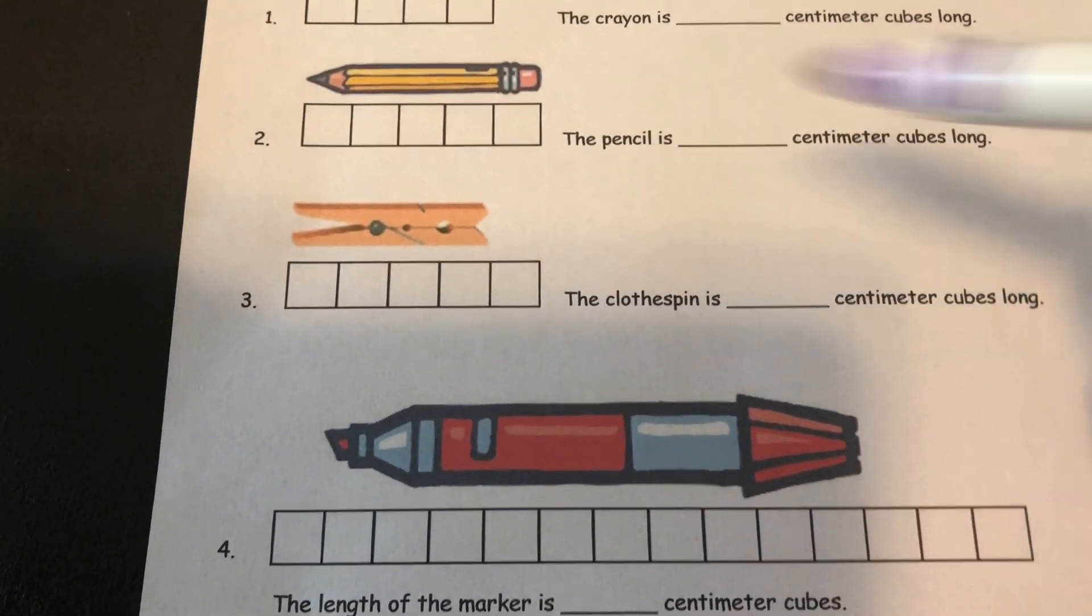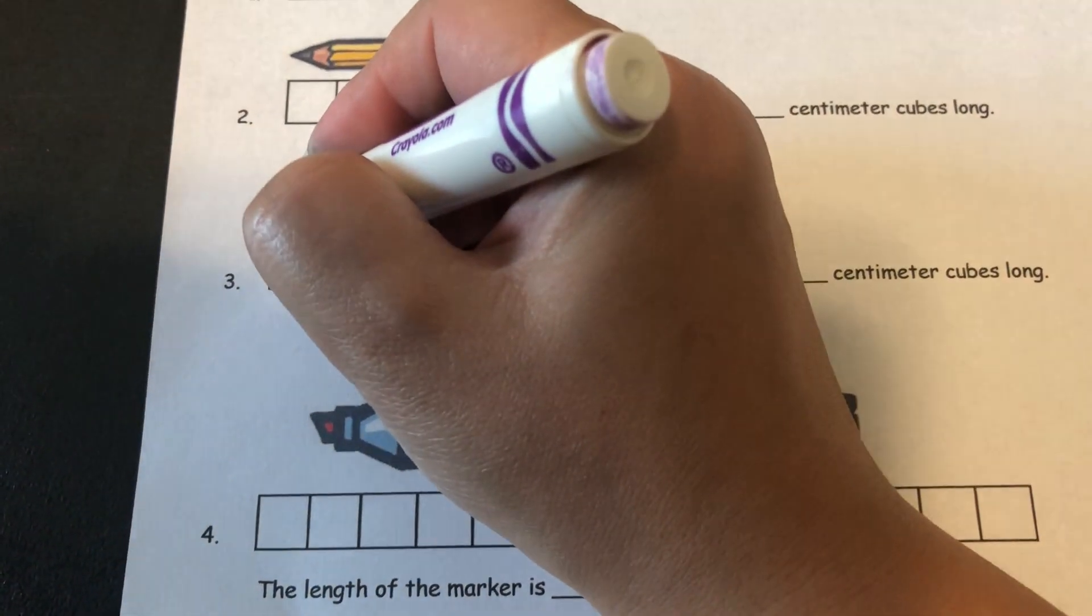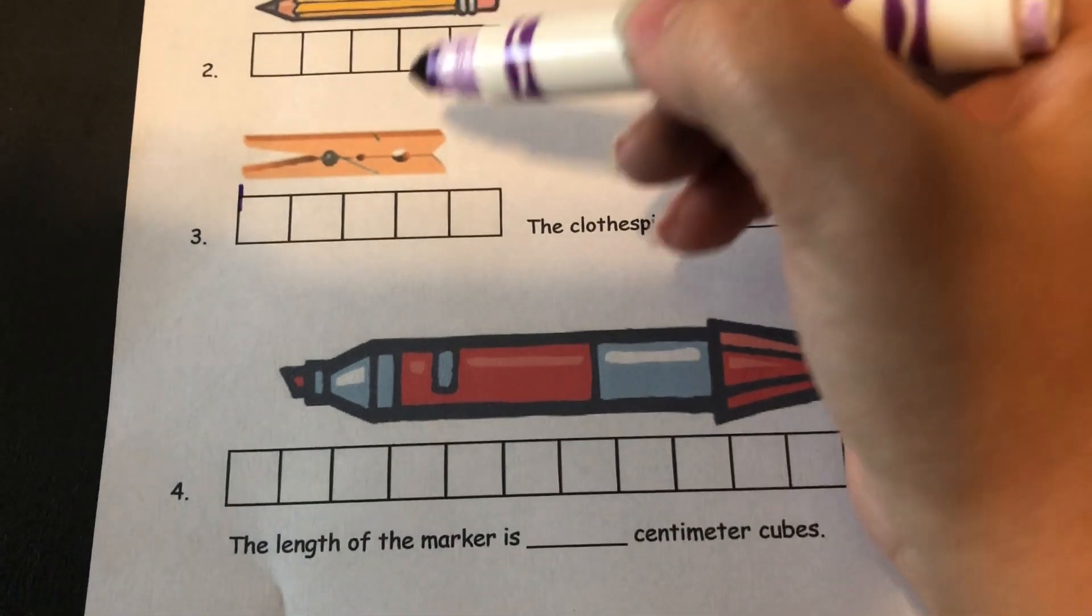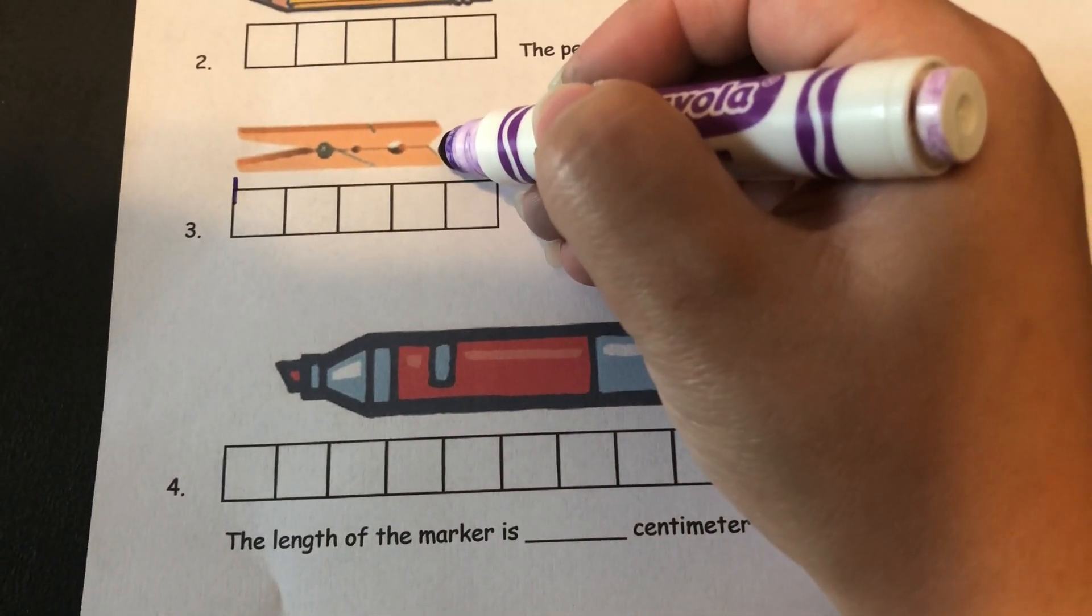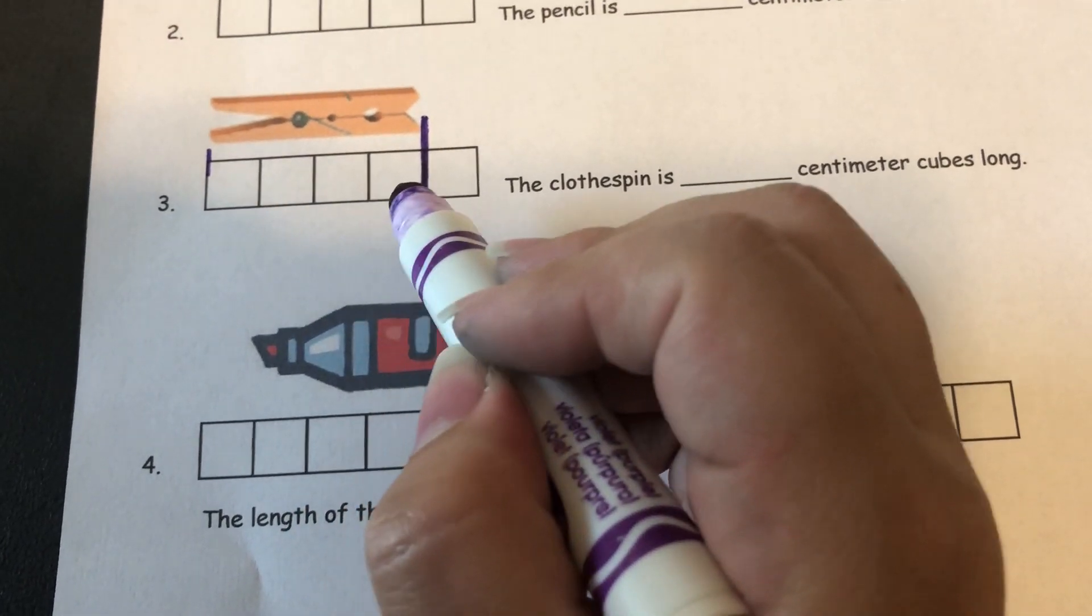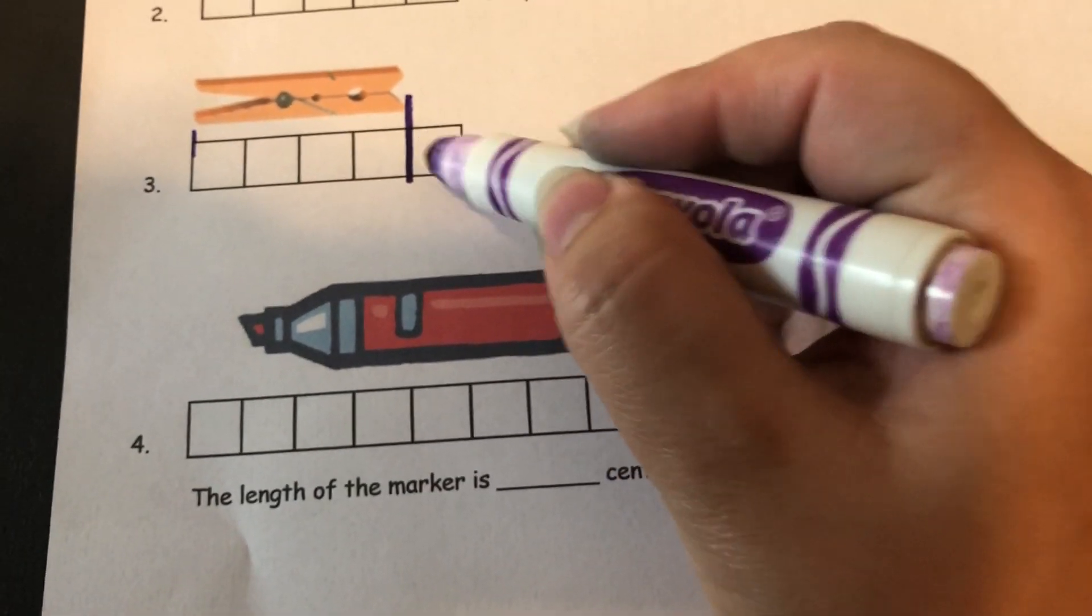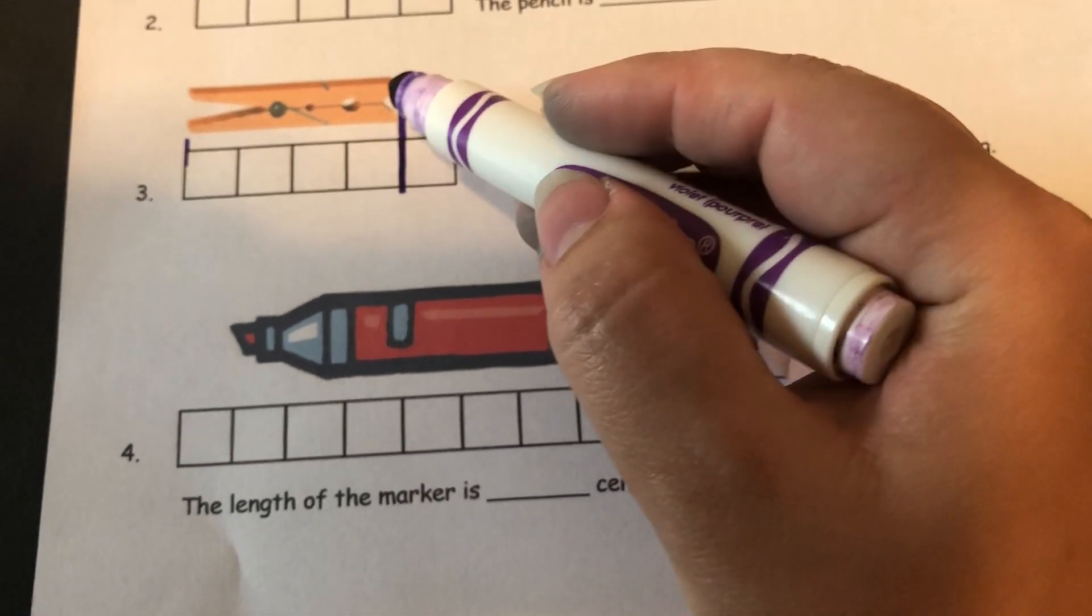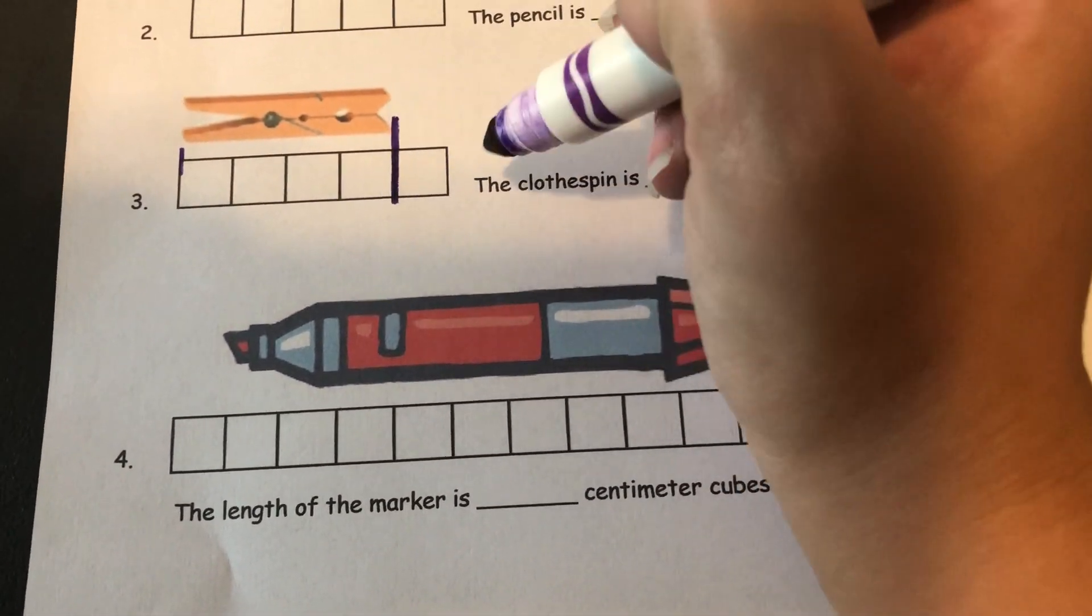Number three is a clothespin and it starts where the centimeter cubes start but it actually ends right here. So when you're counting your cubes up, make sure you don't count this last one because the clothespin ends before you get to that one.